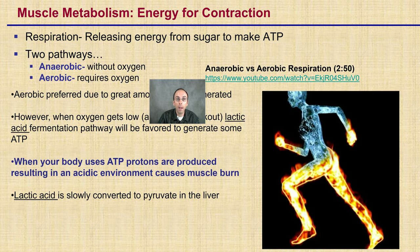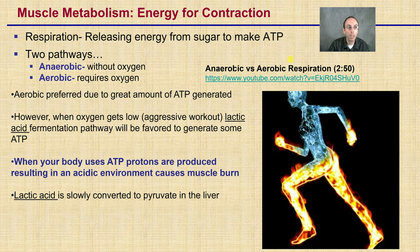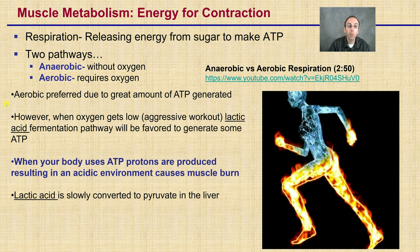Muscle metabolism: the energy for contraction comes from respiration, which is the release of energy from sugar to make ATP. There are two pathways — aerobic and anaerobic. Anaerobic is without oxygen; aerobic requires oxygen. Aerobic is preferred because a much greater amount of ATP — adenosine triphosphate — is generated. However, when you work out and oxygen gets low during an aggressive workout, your body will favor the lactic acid fermentation pathway to generate some ATP.